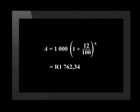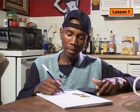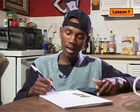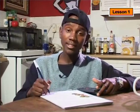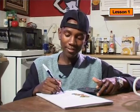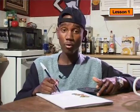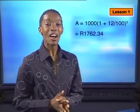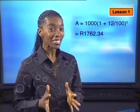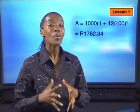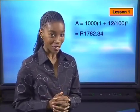R1,762.34. Are you with me, Mandla? Okay — 12 divided by 100 plus 1, to the power of 5, times 1,000 equals R1,762 and 34 cents. Congratulations, Mandla! Now let's do some real detective work and find out how much more profit we are making by using compound interest.